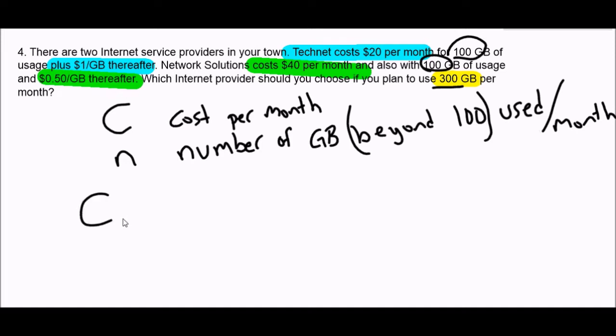So now I can create two equations. One of them, I'll just temporarily call it CT, meaning the cost at TechNet, is $20 basic fee. And then for every gigabyte I use beyond the 100, it's going to be another dollar. The other company, Network Solutions, starts at $40, and then it's only 50 cents for every gigabyte past the 100 point. So there's the two equations.